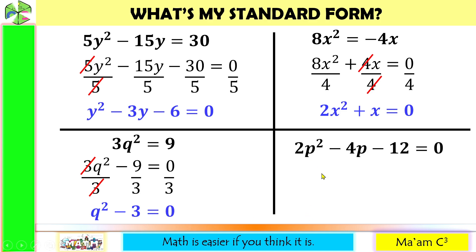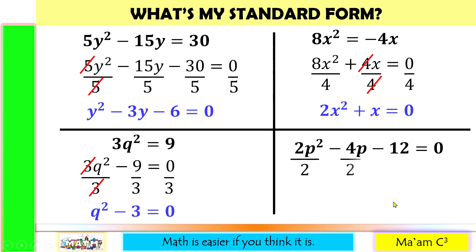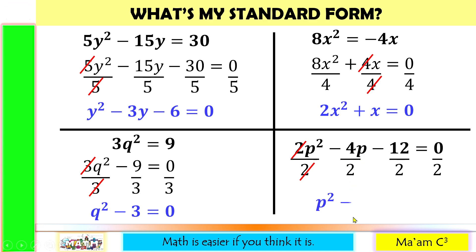Last one: 2p squared minus 4p minus 12 equals 0. This is already in standard form. However, we can still simplify by dividing everything by 2. The 2's cancel, giving us p squared. Negative 4p divided by 2 is negative 2p. Negative 12 divided by 2 is negative 6. And 0 divided by 2 is 0.